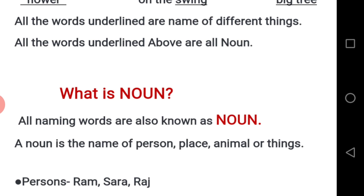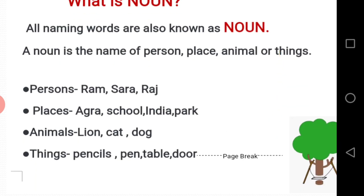For example, persons' names: Sara, Raj, and your name also. Places: Agra, school, India, Park, and your home. Animals: lion, cat, dog, and so on. Things: pencil, pen, table, door. These are all examples of nouns.